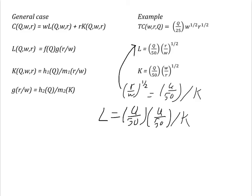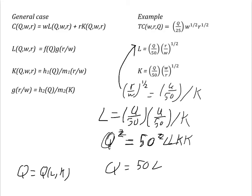Q over 50 times Q over 50 slash K. Now solve for Q as a function of L and K. Here, Q squared is equal to 50 squared L K or Q equals 50 L to the 1 half K to the 1 half.